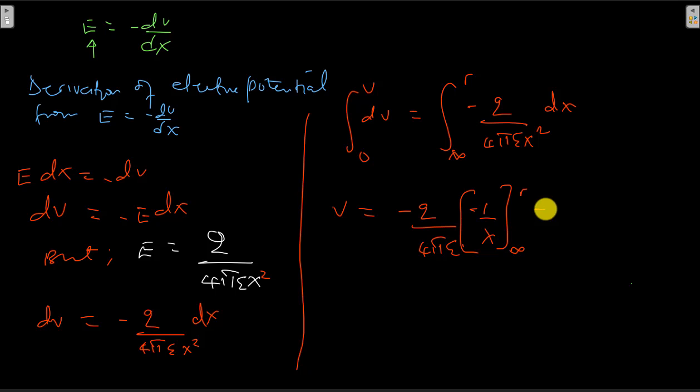That's negative q over 4πε. In brackets, we have negative 1 over r, minus, plus 1 over infinity. So 1 over infinity is 0, and we'll end up with electric potential as q over 4πε r.